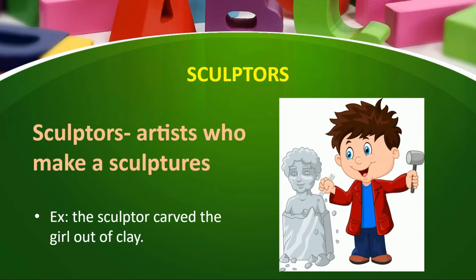Next word is sculptor. As we have learnt about statue, the person by whom the statue was created is called a sculptor. A sculptor is an artist who makes a sculpture or a statue. For example, the sculptor carved the girl out of clay — the artist created the statue of a girl out of clay. A sculptor uses different tools to mould material and create a statue.